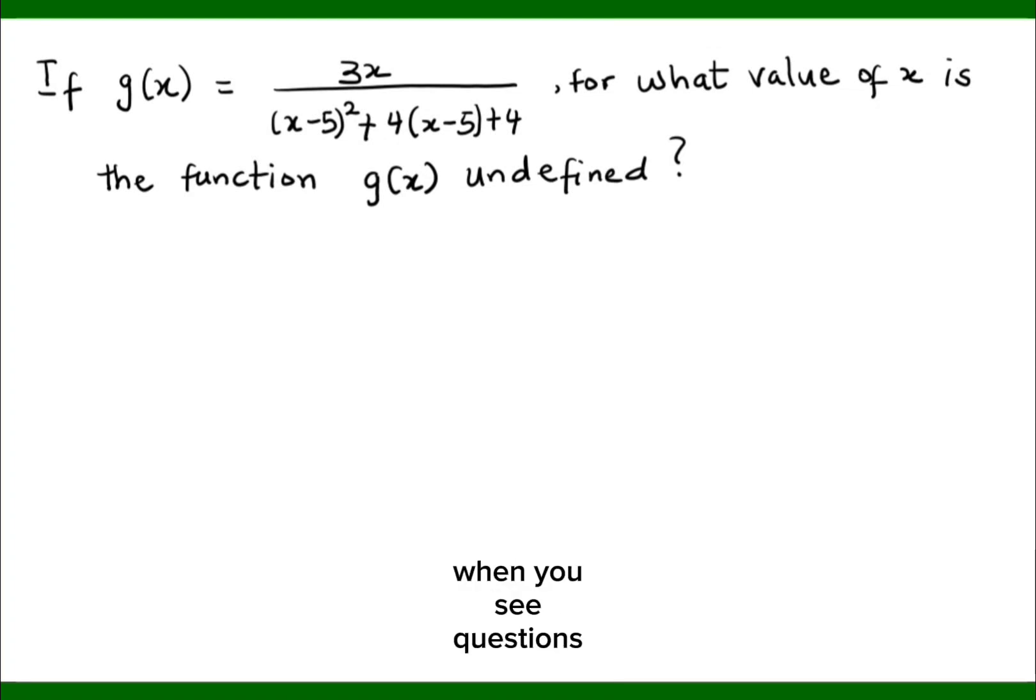So in this case, when you see questions like this, for a value to be undefined, the denominator of this fraction must be equated to 0. So we need to have x minus 5 all squared plus 4 bracket x minus 5 plus 4 equals 0.